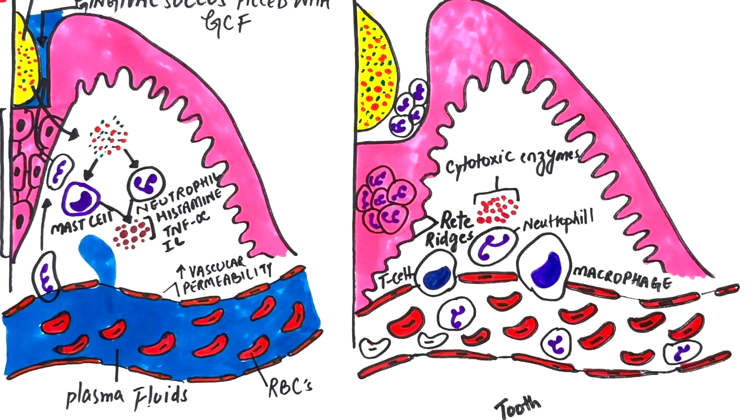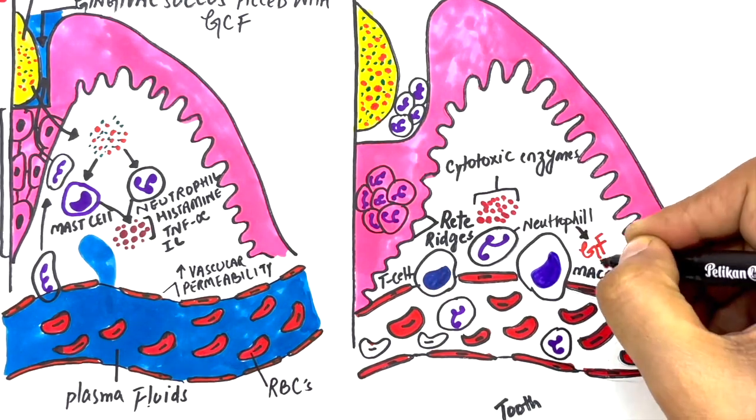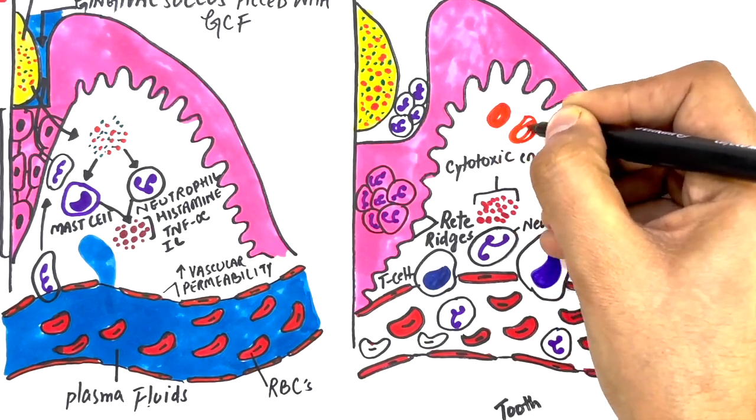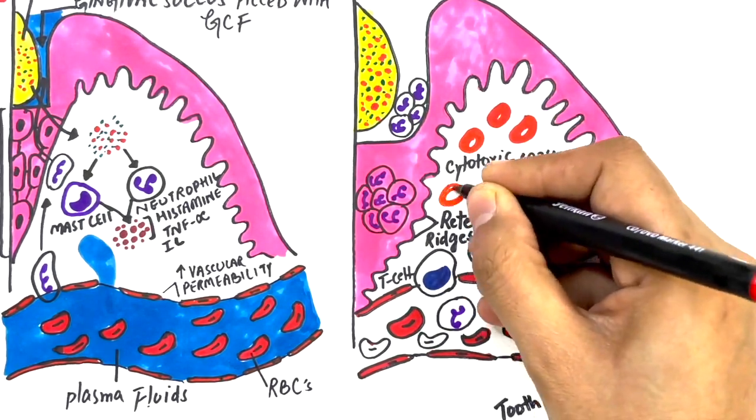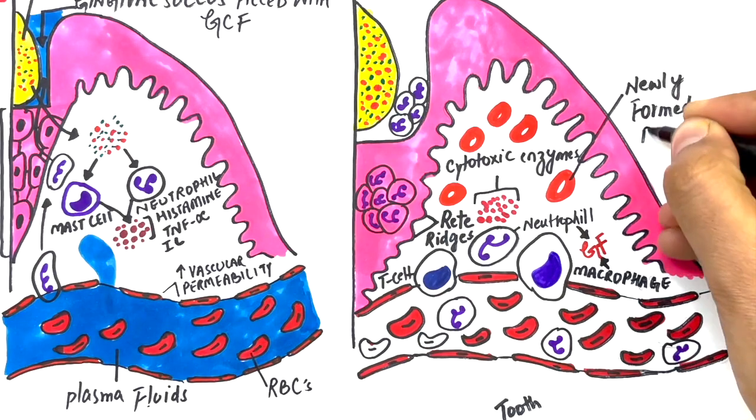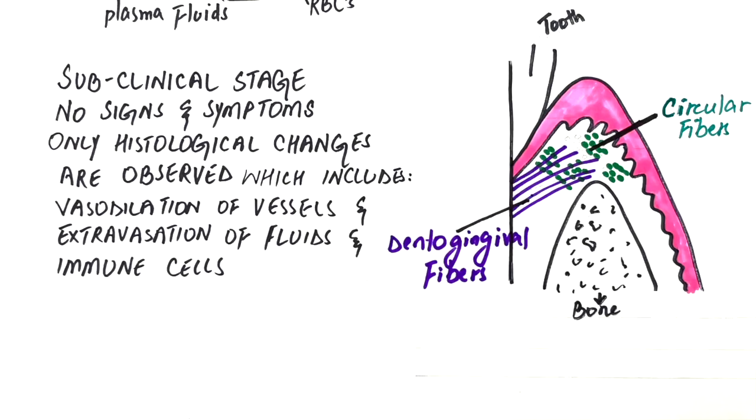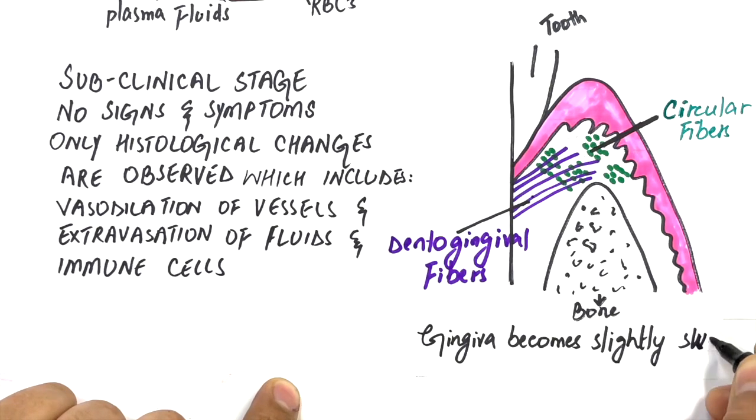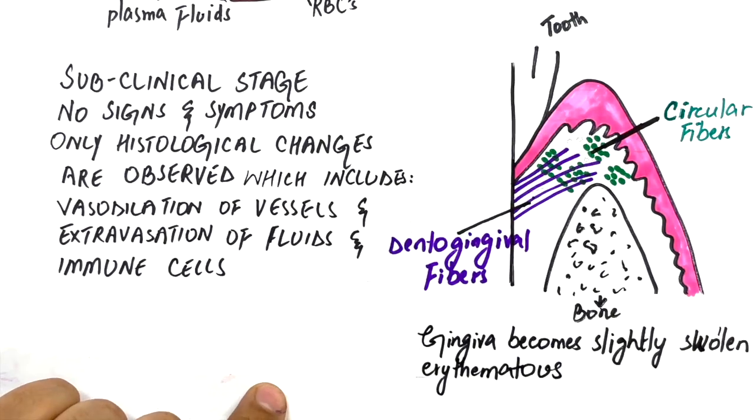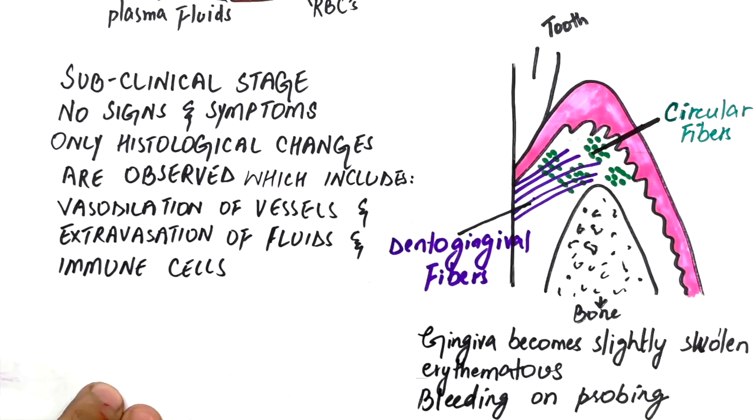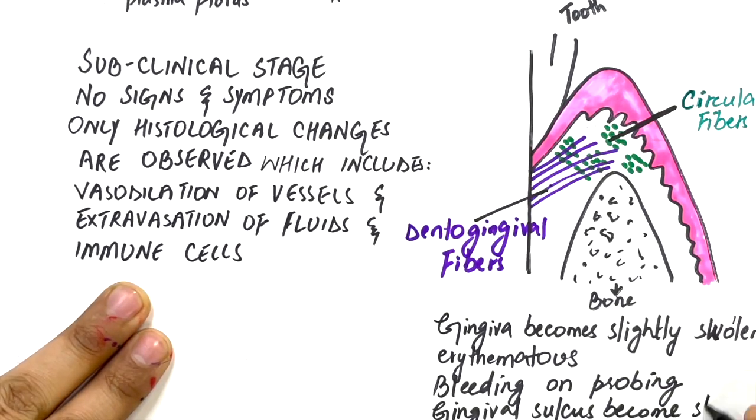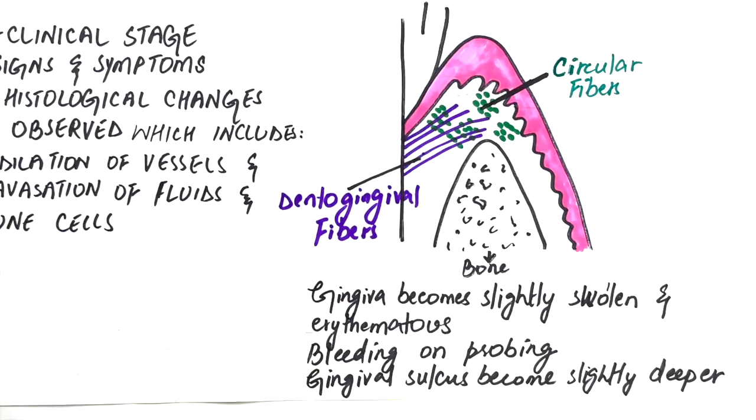Fibroblasts also show alterations in structure with a decreased capacity for collagen production. In addition, lymphocytes and macrophages produce growth factors that promote angiogenesis, which is the development of new blood vessels. Hence, at this stage, the gingiva becomes slightly swollen and erythematous, and the patient will have bleeding with probing due to increased blood vessel proliferation. The gingival sulcus becomes slightly deeper resulting from the destruction of gingival fibers.